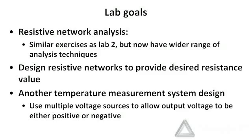In part two, we will actually design resistive networks to provide a given resistance value. This is primarily practice with using series and parallel combinations of resistors in your analog parts kit to give a resistance which is not available directly as a single resistor in your kit. That can be extremely useful if your design calls for a resistance value and you don't have a resistor with that particular value.